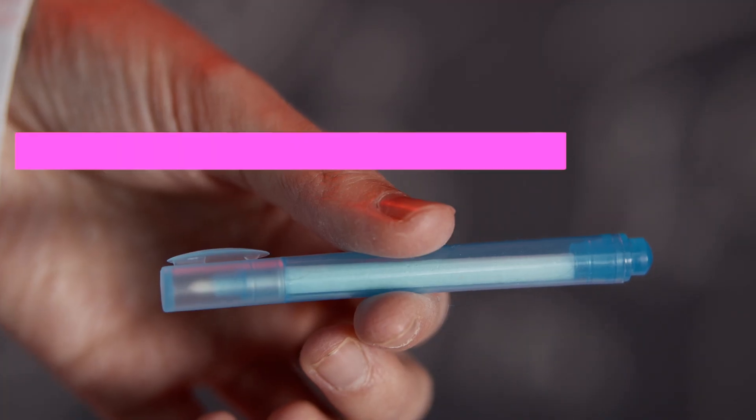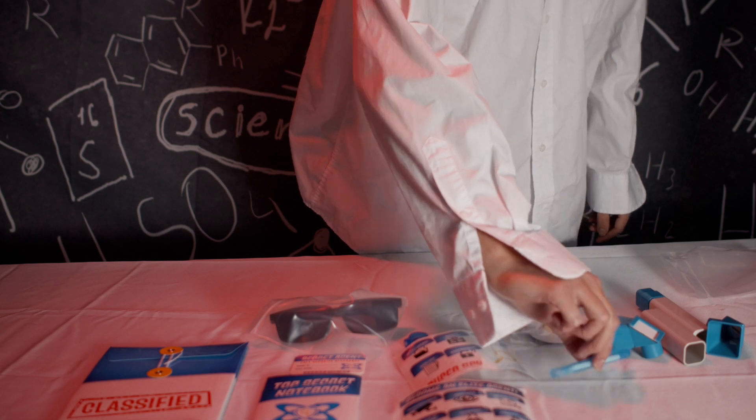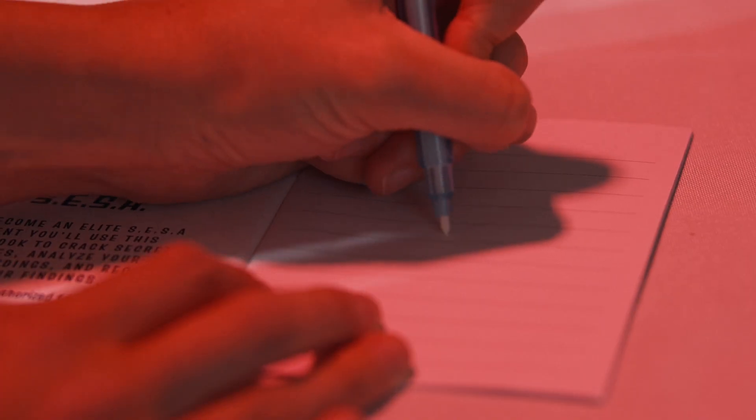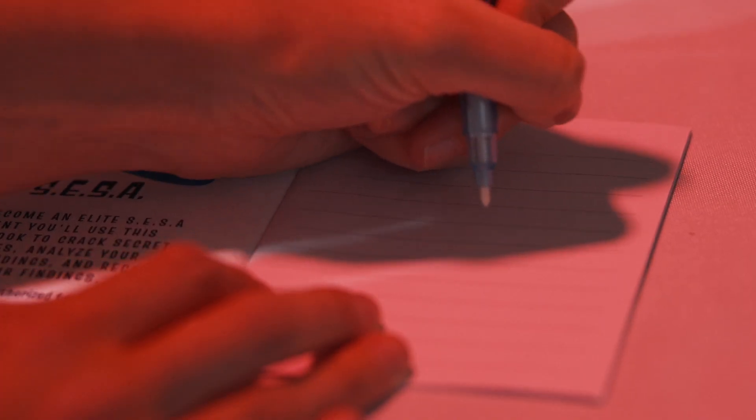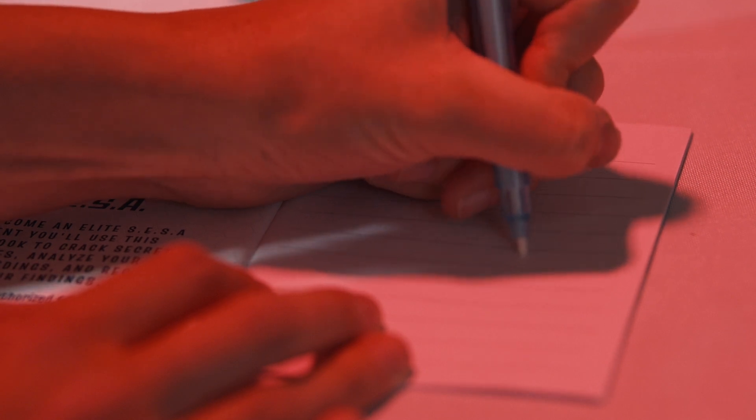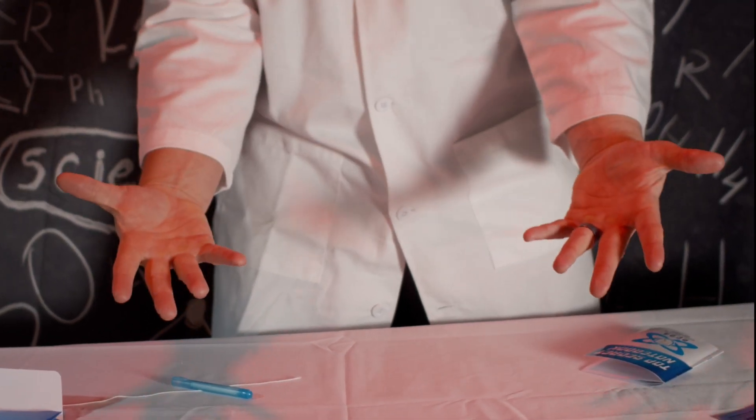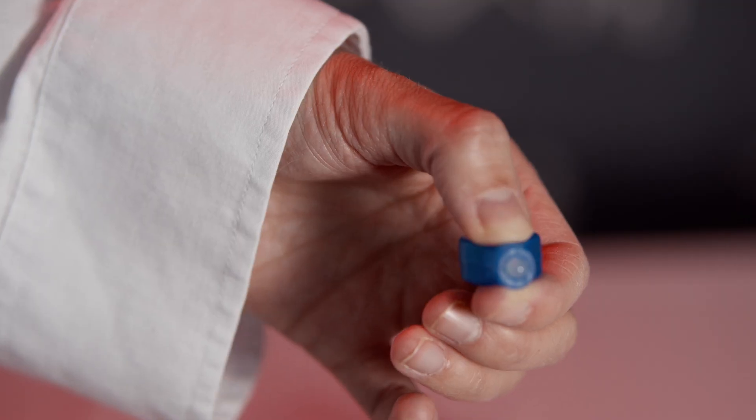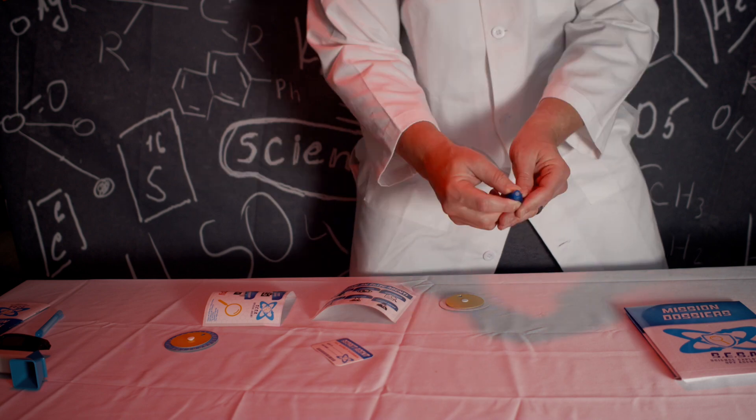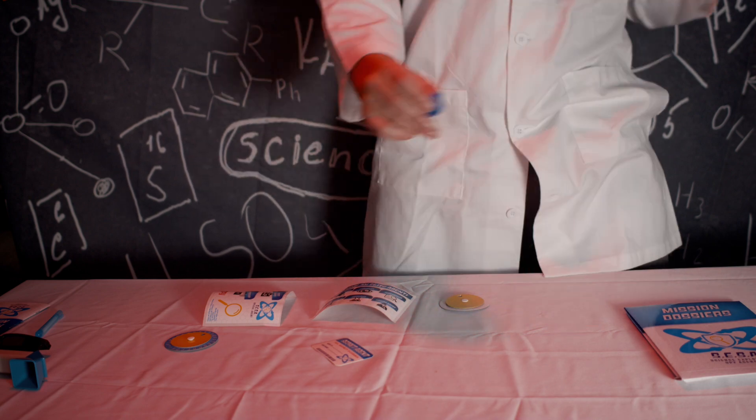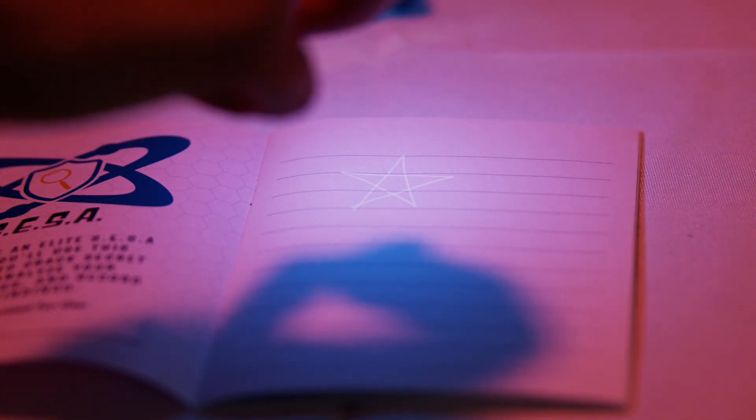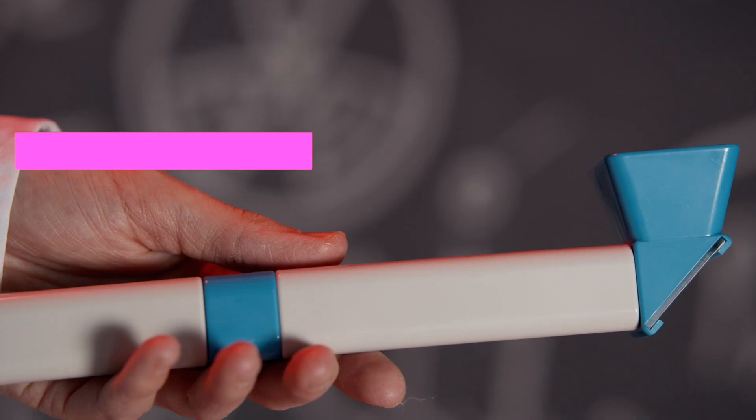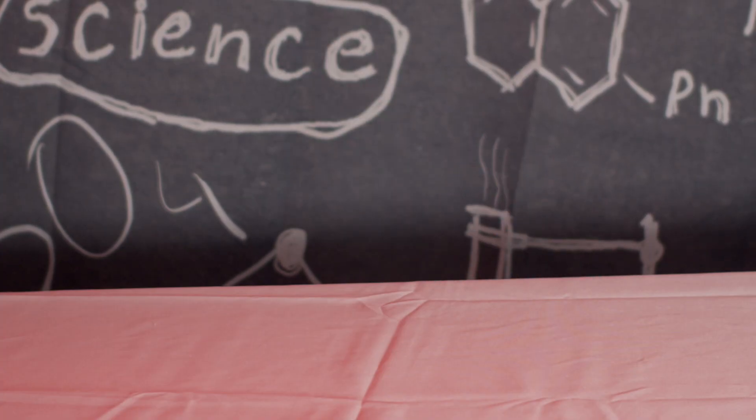Wow. Behold the invisible ink pen. The silent communicator's best friend. With this you can leave hidden messages in plain sight, completely undetected. But how can we read the secret message with the invisible ink? Well, this should do the trick. The UV light decoder. This sleek gadget may look like an ordinary flashlight, but it holds the power to unveil hidden secrets and expose covert messages. Next up, the periscope. Your ticket to peeking around corners without being seen. Perfect for any spy on the lookout.